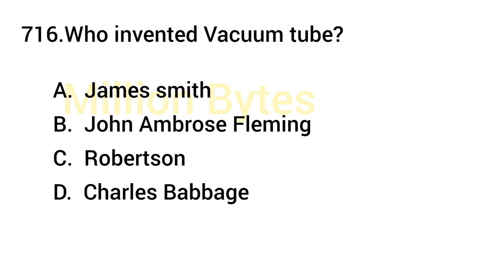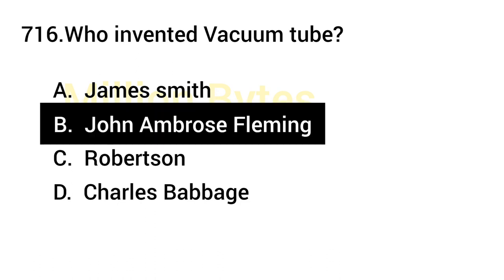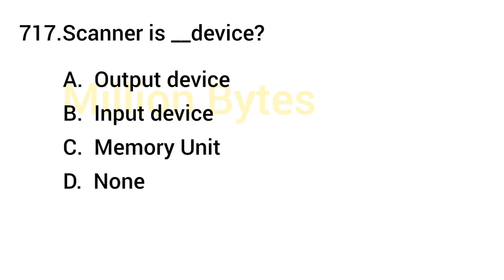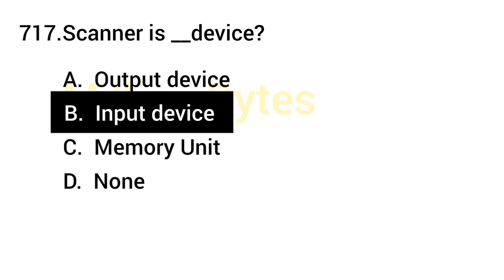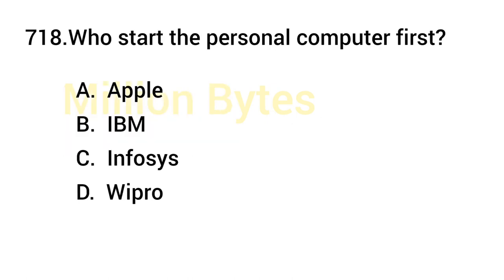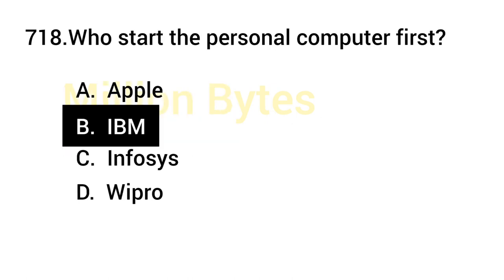Who invented the vacuum tube? John Ambrose Fleming. Scanner is which type of device? Answer is Input Device. Who started the personal computer first? Answer is IBM.